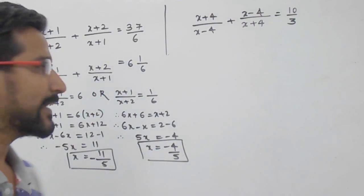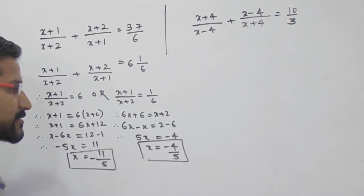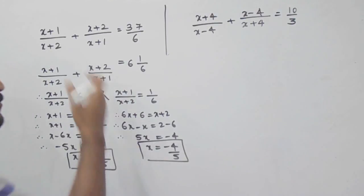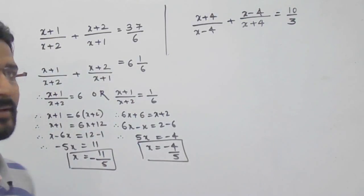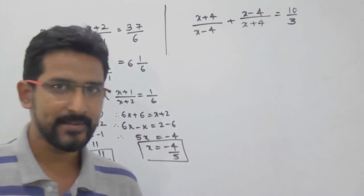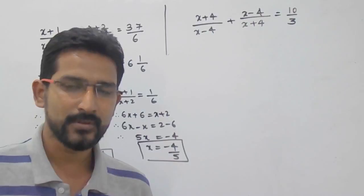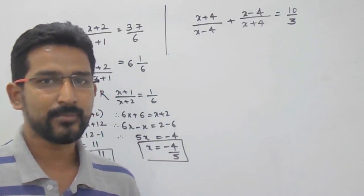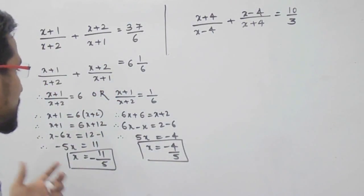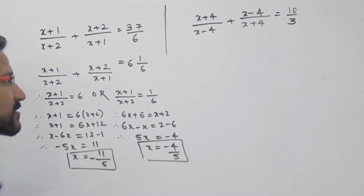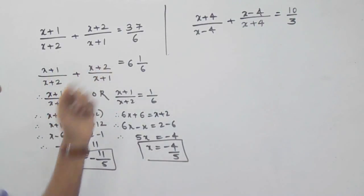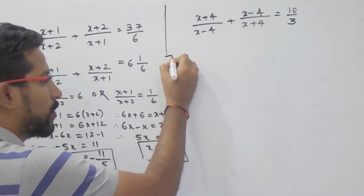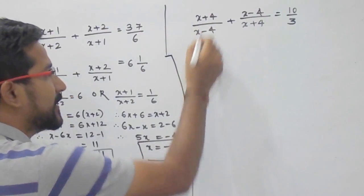By this trick, your calculation is reduced to a simple equation. If you do cross multiplication directly on the original equation, you will get a squared term and have to solve it by splitting the middle term or by the formula method. So by this shortcut trick you can directly find the answer using simple equations. Let's see one more example.